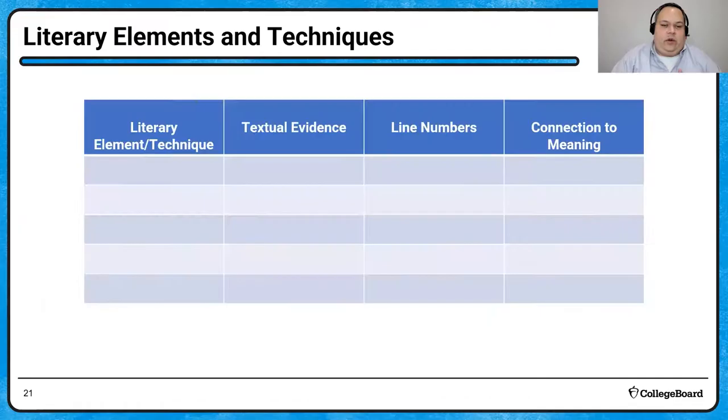And I like a graphic organizer. I like something that looks like this, where you list the techniques on the left. Then you provide the textual evidence, give the line number, and then probably the widest column should be that final column. What is the connection between that literary element or technique, that textual evidence that you provided, and the meaning? That could also say, what is the connection to your thesis, because that's essentially what we're doing. If you want to watch a video where I detail this process, where we take the literary elements and we start to fill in this table, you might want to turn into review session number four. Because in that video, I discussed this table using a different example.